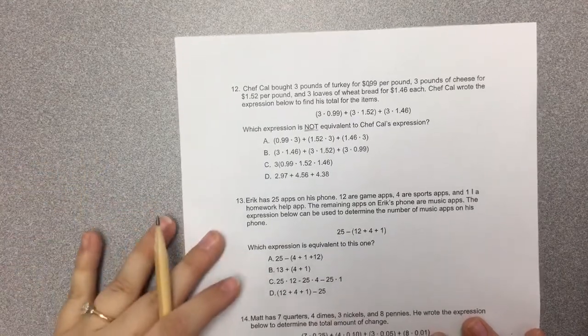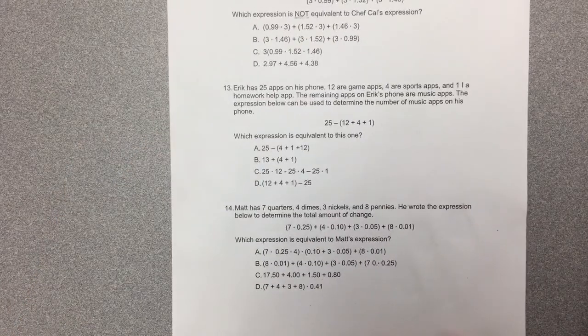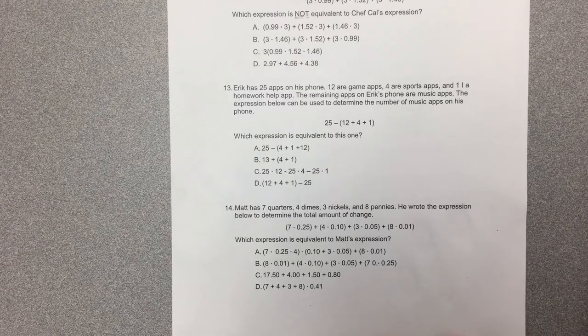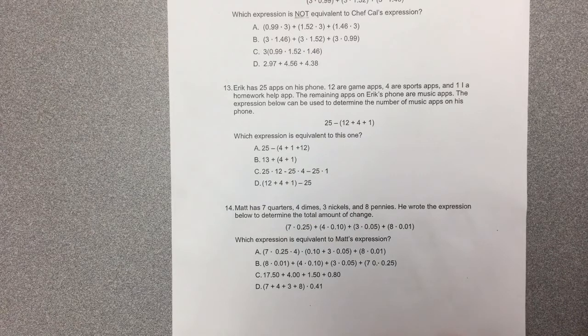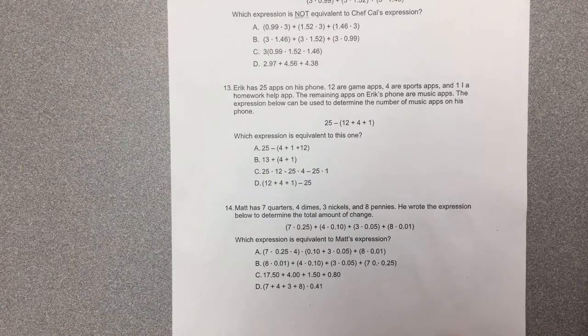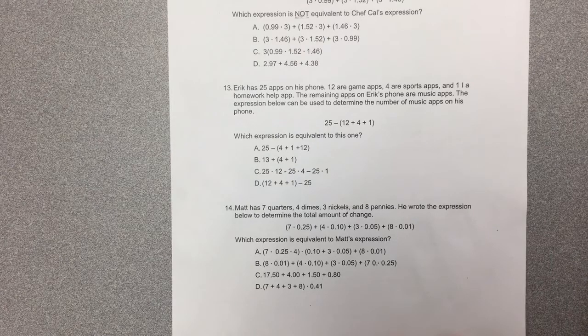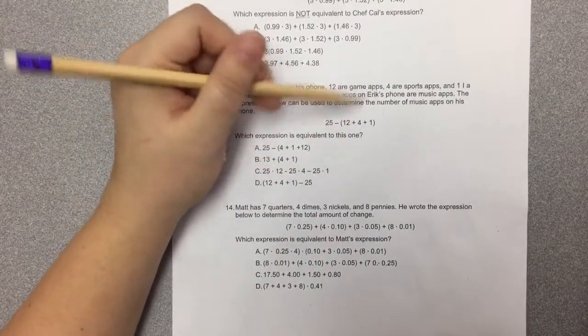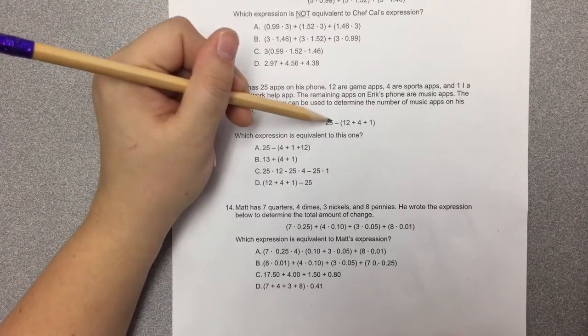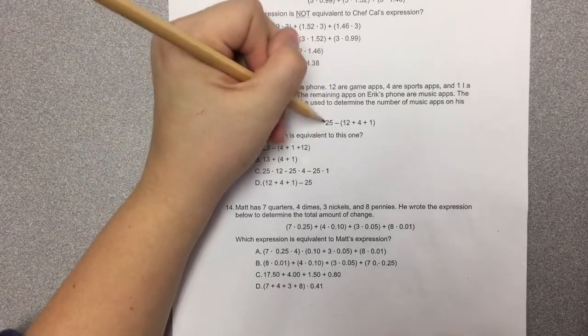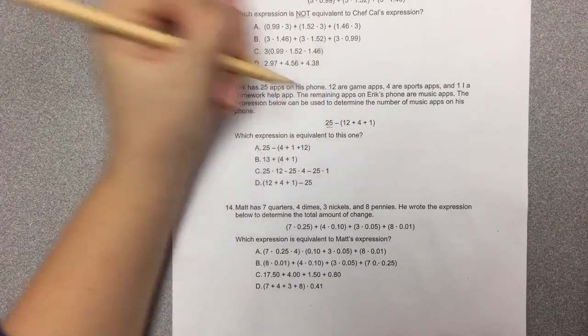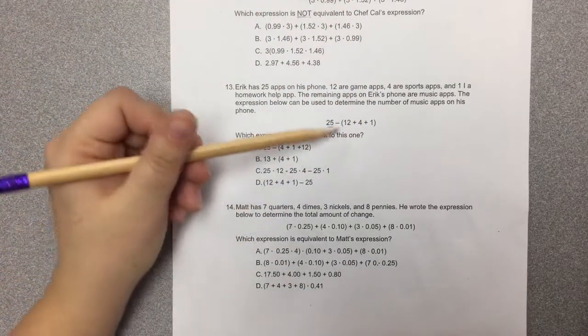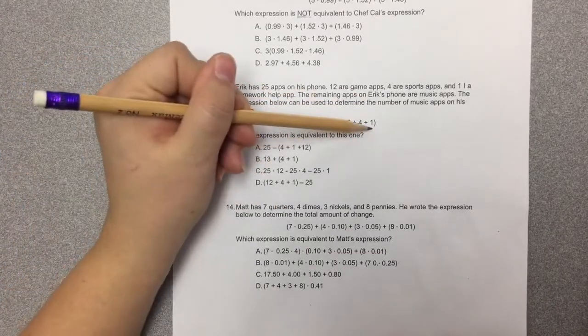Eric has 25 apps on his phone: 12 are game apps, 4 are sports apps, and 1 is a homework help app. The remaining apps on Eric's phone are music apps. The expression below can be used to determine the number of music apps on his phone: 25 minus 12 plus 4 plus 1. Alright, so with addition we can move all sorts of stuff around, but remember with subtraction that the number it's being subtracted from needs to be in the front because it's saying 25 minus whatever this is. Don't forget that, because that could change it if you decided to subtract 25 from these numbers.